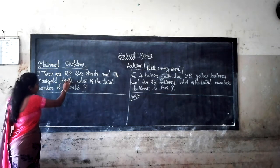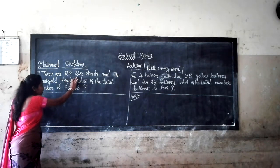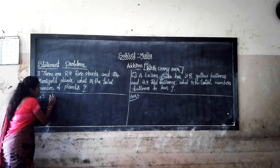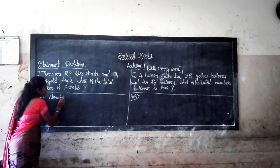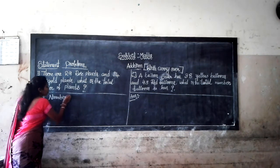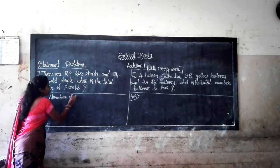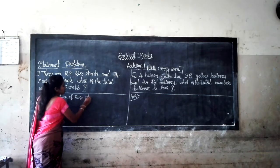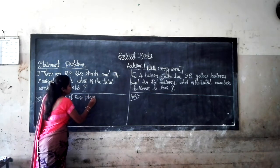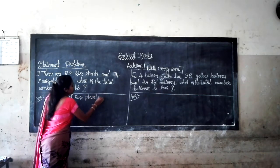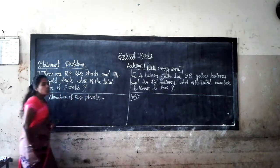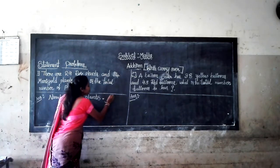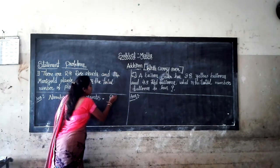In the first one, how many rose plants? Number of rose plants — how many? 29.